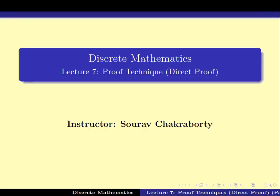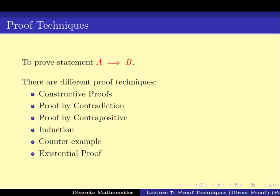Welcome to the seventh video lecture in this discrete mathematics course. In this video we will continue with our study of proof techniques. We will look at some of the problems and some new techniques of solving them. So far we have seen that a theorem can be represented as A implies B, where A is a set of assumptions and B is the deduction.